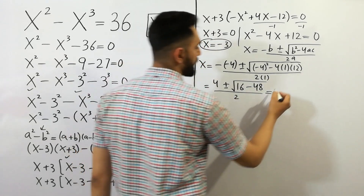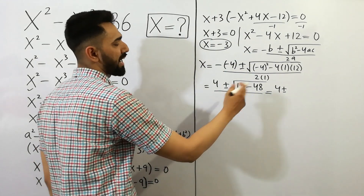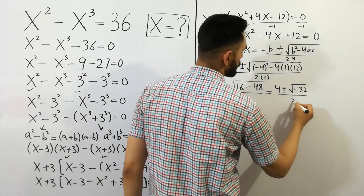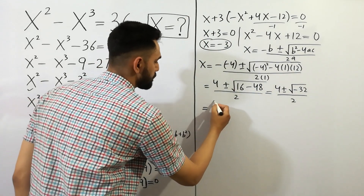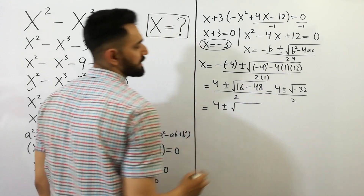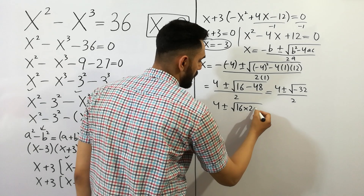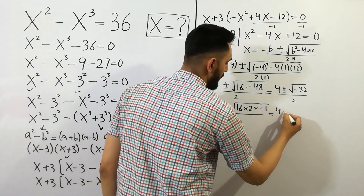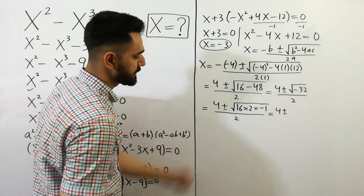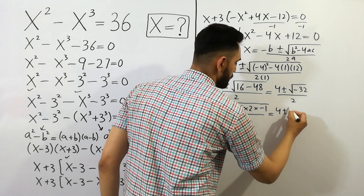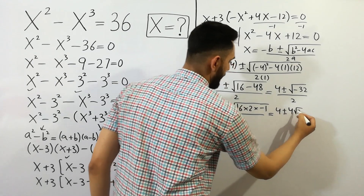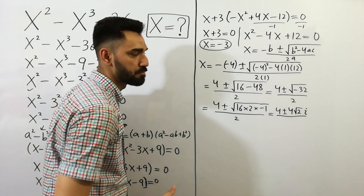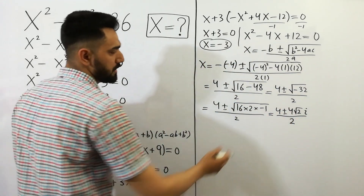Next, we can write: 4 plus or minus square root of 16 minus 48, which gives minus 32, divided by 2. And square root of minus 32 can be written as square root of 16 times 2 times minus 1, divided by 2. The square root of 16 is 4, and square root of minus 1 is i (iota), which is the complex number, so we get 4 plus or minus 4 root 2 times iota, divided by 2.